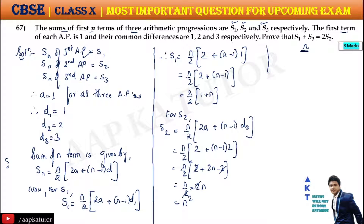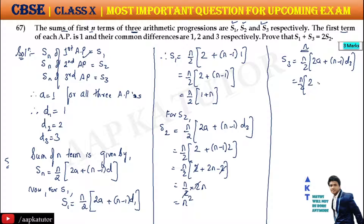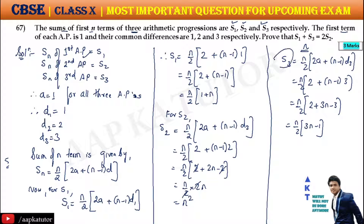In the same way, let's find S3. S3 = n/2 · (2a + (n−1)·D3) = n/2 · (2 + (n−1)·3) = n/2 · (2 + 3n − 3) = n/2 · (3n − 1). So we have S1, S2, and S3.